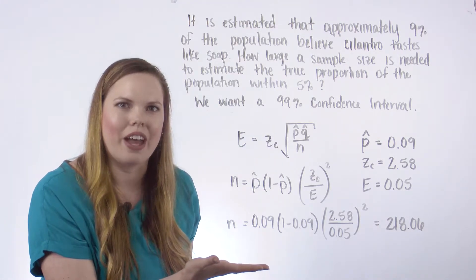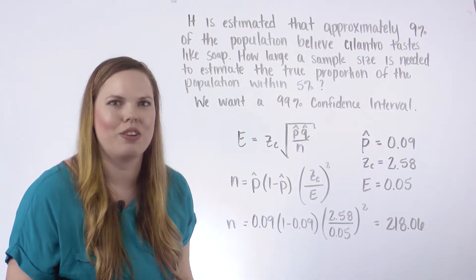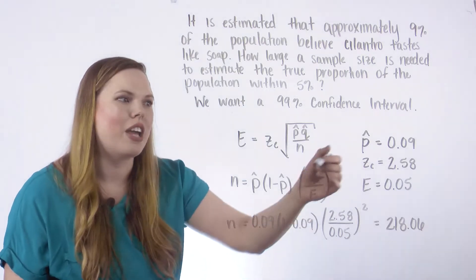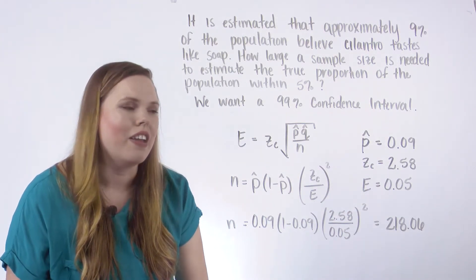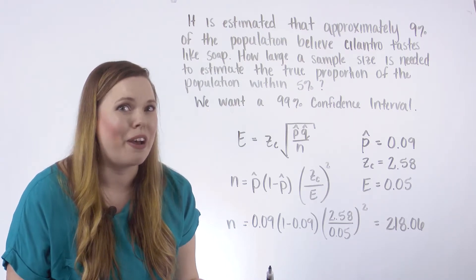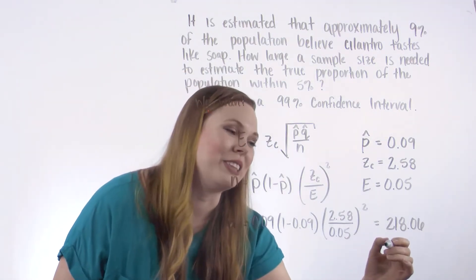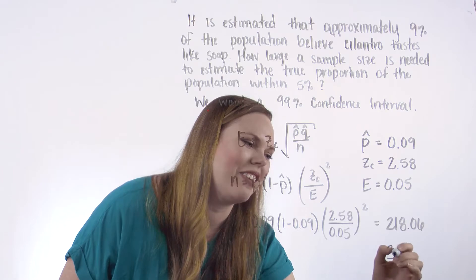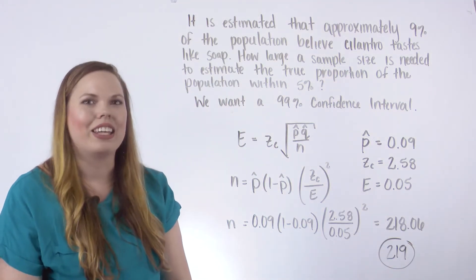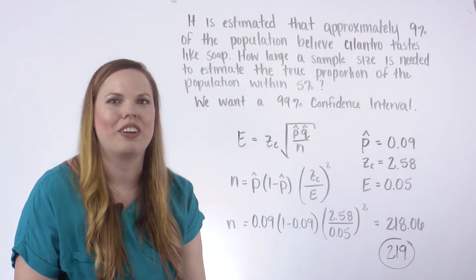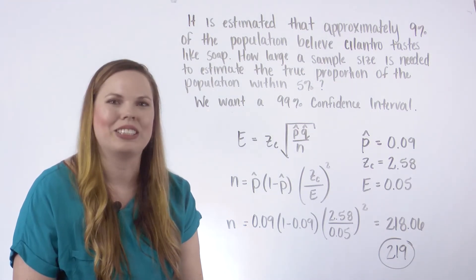we do not want to go below that. So we actually need to survey 219 people to have a maximum margin of error of 0.05. Otherwise we would have it a little bit above 5%. So we actually need to survey 219 people in order to get a good confidence interval with a margin of error 0.05.